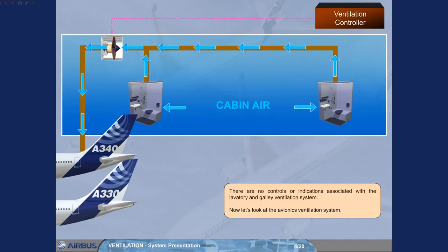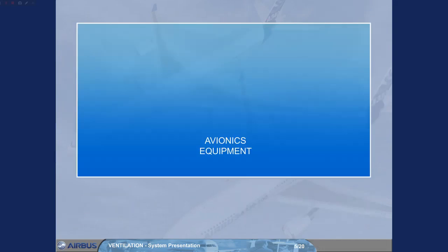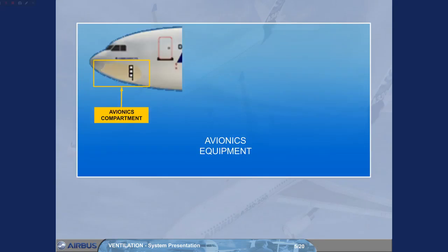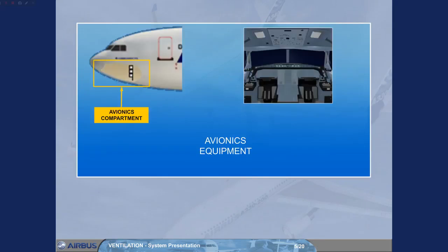Now let's look at the avionics ventilation system. The avionics ventilation system provides cooling air for the avionics compartment and the flight deck instruments. Let's now look at how the system works.